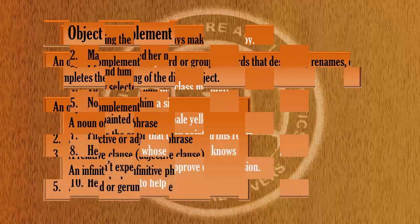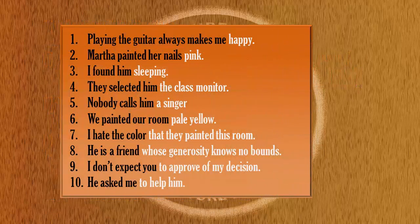Look at these example sentences. 'Playing the guitar always makes me happy' — 'happy' is an adjective and it describes the object 'me'. 'Martha painted her nails pink' — 'pink' is an adjective and it describes 'nails', which is the object. 'I found him sleeping' — 'sleeping' is a gerund and it describes 'him', therefore it is a complement of the object. All complements in the remaining sentences are colored gray.